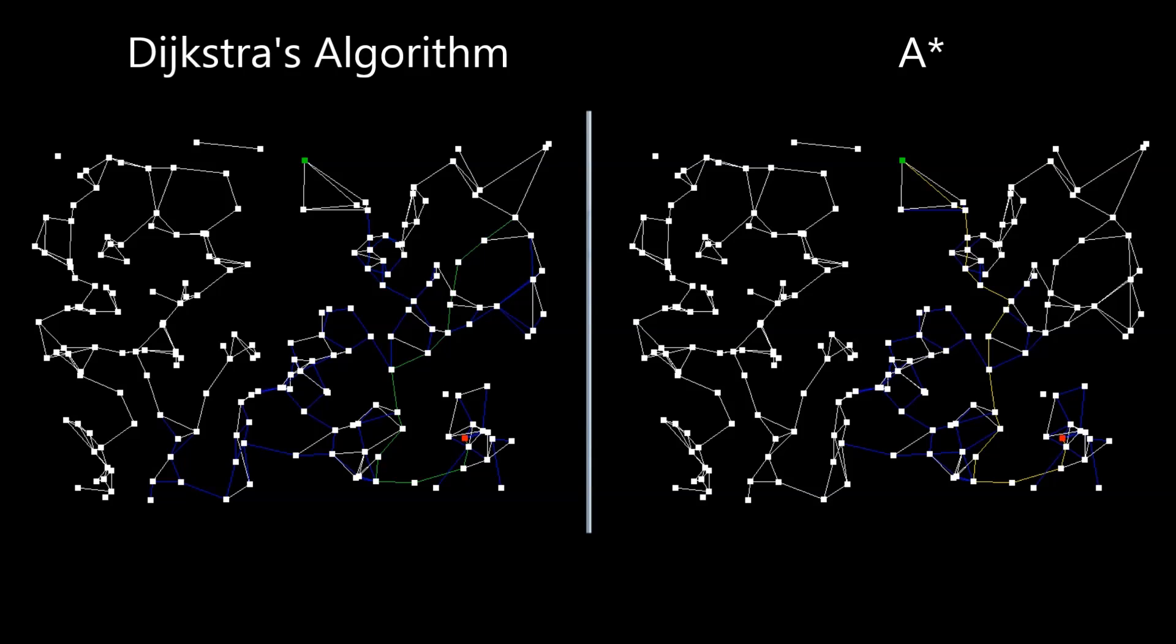You can see that this is an improvement by the fact that A-star finishes before Dijkstra's does. And apart from that, you can also see that Dijkstra's Algorithm is exploring the areas on the bottom left and the top right, which is basically useless.